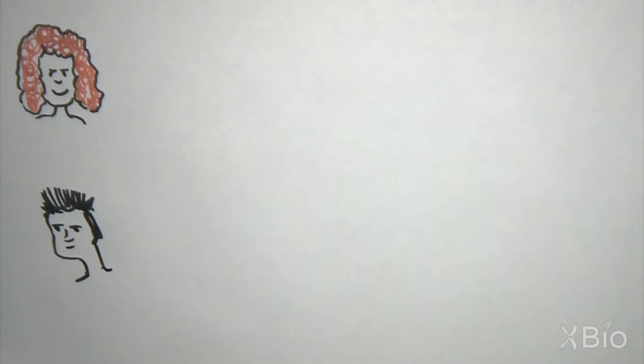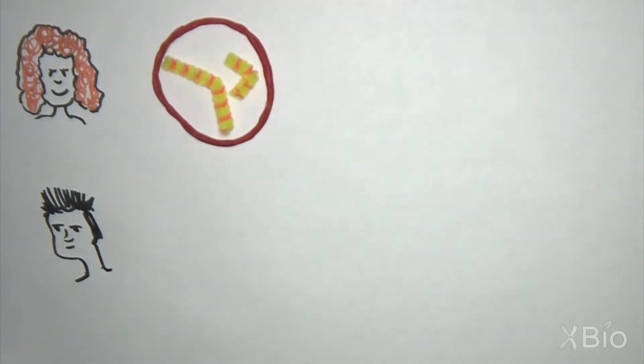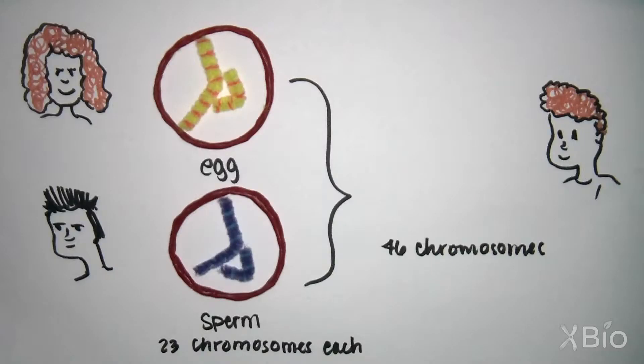Let's take human meiosis as an example, a process that gives rise to our gametes, eggs and sperm. Human gametes have one copy of each of the 23 chromosomes, which is half the number of most of our body cells.